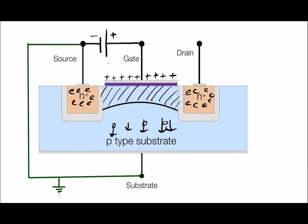At the same time, the positive charge at the gate attracts electrons, so electrons gather in this area just below the oxide. The electrons cannot flow through the oxide to the voltage source, so they accumulate here. As these electrons gather, a thin n-channel is created in this area. This n-channel is formed by inverting the p-type semiconductor substrate, which is why it is called the inversion layer.